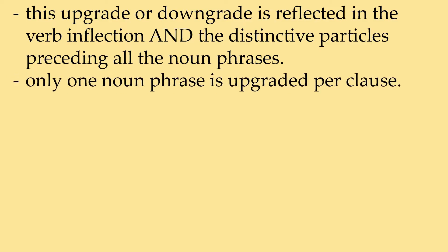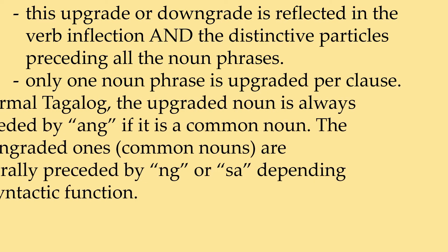Only one noun phrase is upgraded per clause. In formal Tagalog, the upgraded noun is always preceded by ang — if it is a common noun. If it's a name, it's si, in the singular. The downgraded ones, generally, if they are common nouns, take ng or sa depending on the function — whether it's the object, the possessor, or the location. I know there are many ways to explain Tagalog sentence structure because it's very flexible. I will use the verb-initial structure because this is the oldest structure in Proto-Austronesian languages — verb first.